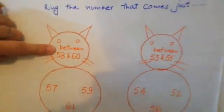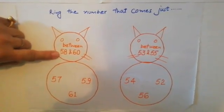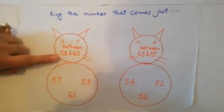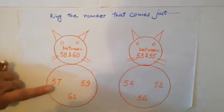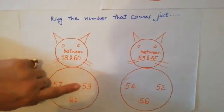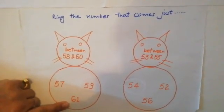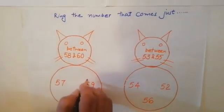What's written here? Between. 58 and 60. What comes between 58 and 60? 57, 59, 61. Now tell me what comes between 58 and 60? 59. We will circle.